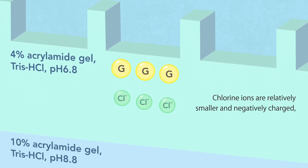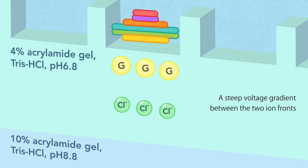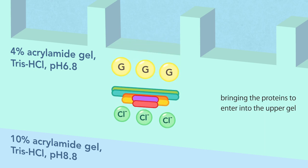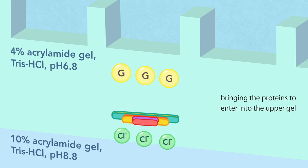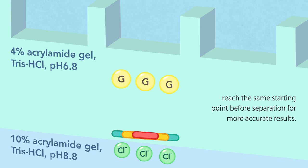Chlorine ions are relatively smaller and negatively charged, thus move faster in the gel. A steep voltage gradient between the two ion fronts is therefore generated, bringing the proteins to enter into the upper gel and stack into a thin line when they arrive at the interface between the upper and lower gels. The stacking effect is to ensure that proteins reach the same starting point before separation for more accurate results.